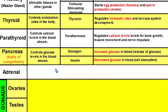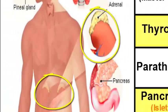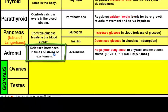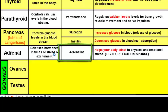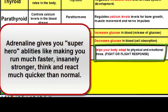The adrenal glands — located on top of the kidneys — are what I like to call the superhero gland. They release hormones in times of stress or excitement. If you're an athlete going into a big game or performing on stage, you're feeling the adrenaline. The hormone the adrenal glands release is called adrenaline, which helps your body adapt to physical and emotional stress. This is called the fight-or-flight response.